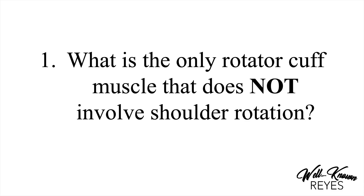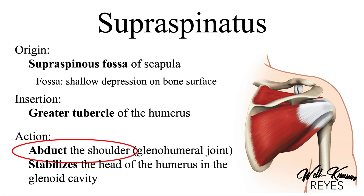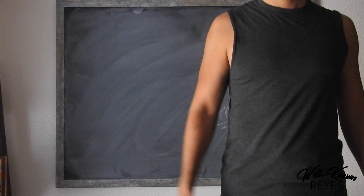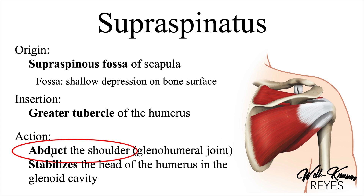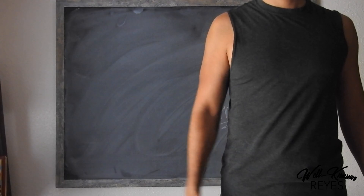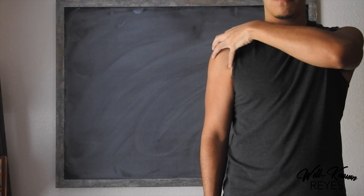Now let's cover a few questions to test your knowledge. First: what is the only rotator cuff muscle that does not involve shoulder rotation? If you said the supraspinatus, you are correct. The supraspinatus only abducts the shoulder — there is no rotation at the glenohumeral joint. The infraspinatus and the teres minor laterally rotate at the glenohumeral joint, and the subscapularis medially rotates. The supraspinatus only abducts the shoulder and stabilizes the head of the humerus in the glenoid cavity.